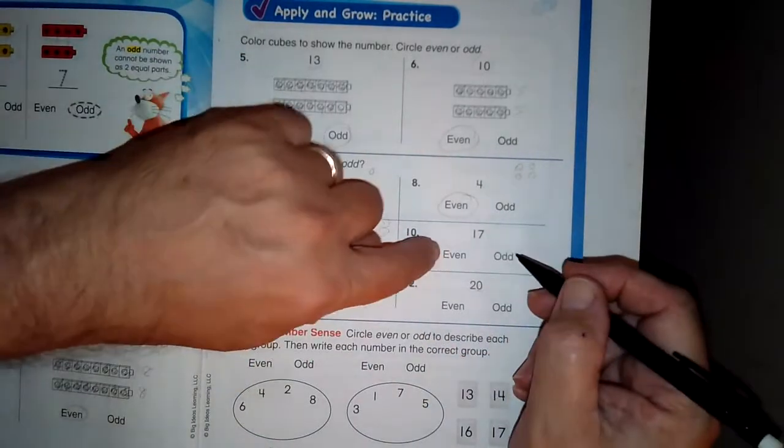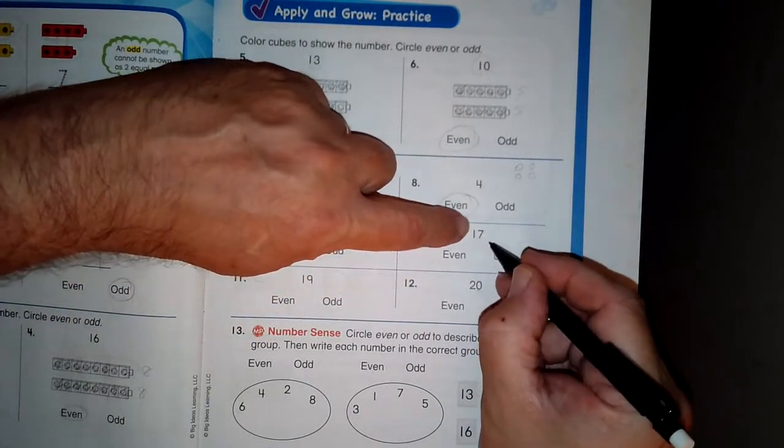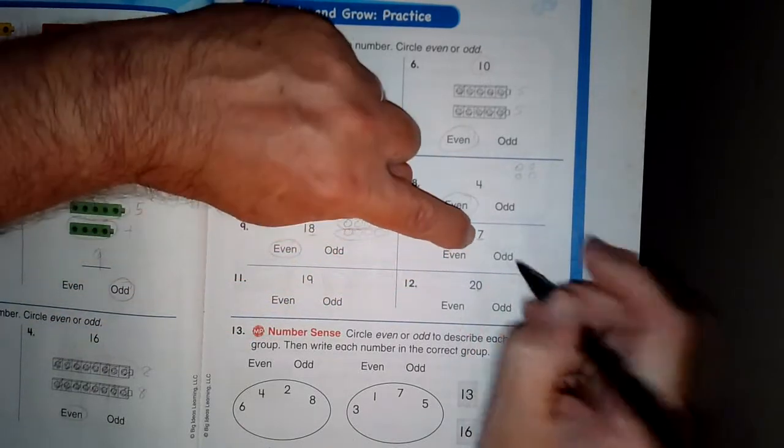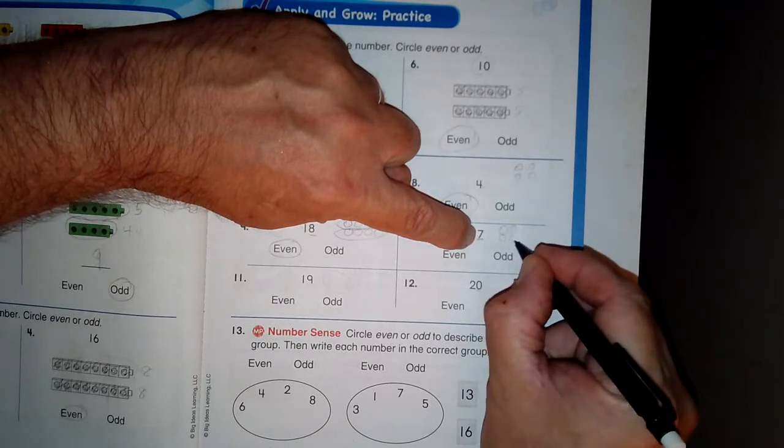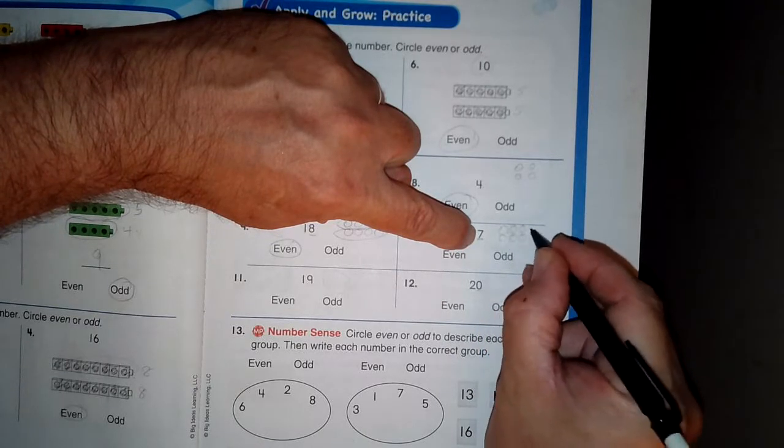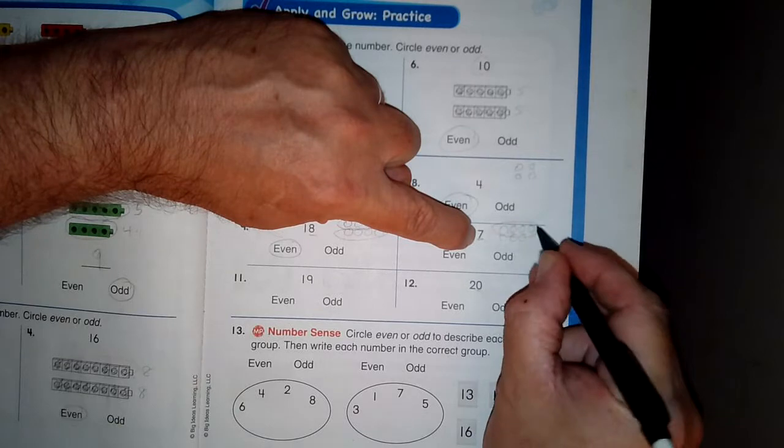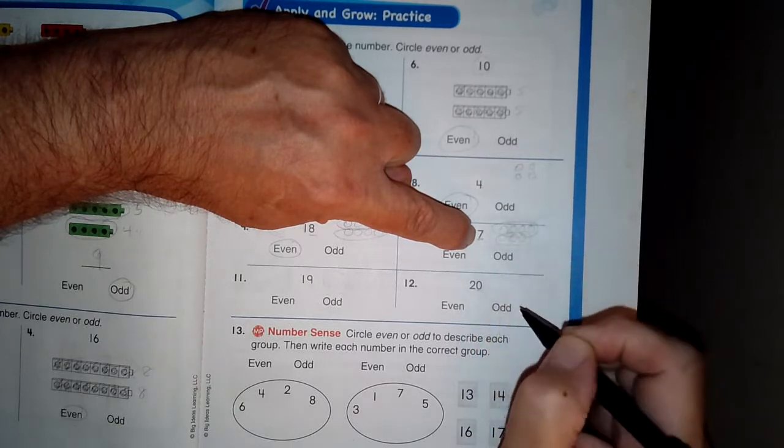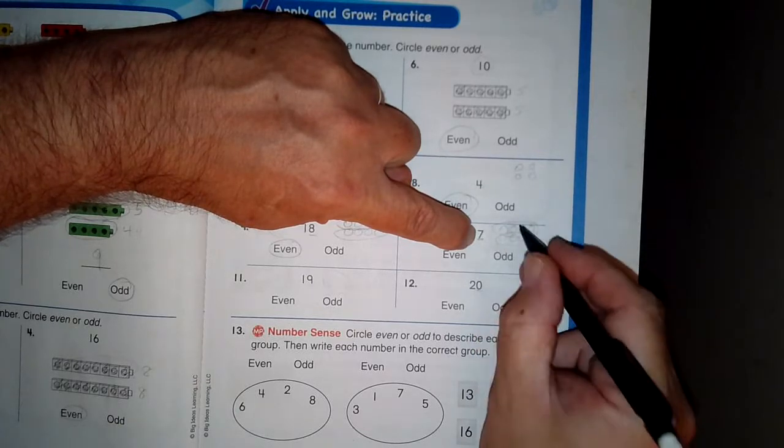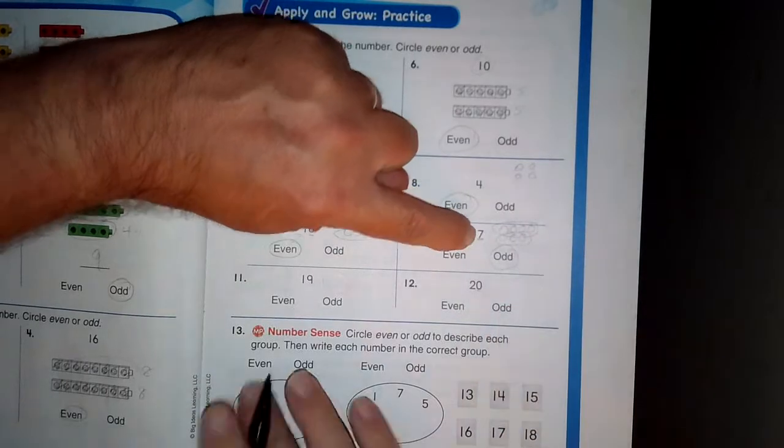So I do the same thing with seventeen. I only look at the seven. One, two, three, four, five, six, seven. There's four on top and three on the bottom. If it's not equal, then it's an odd number.